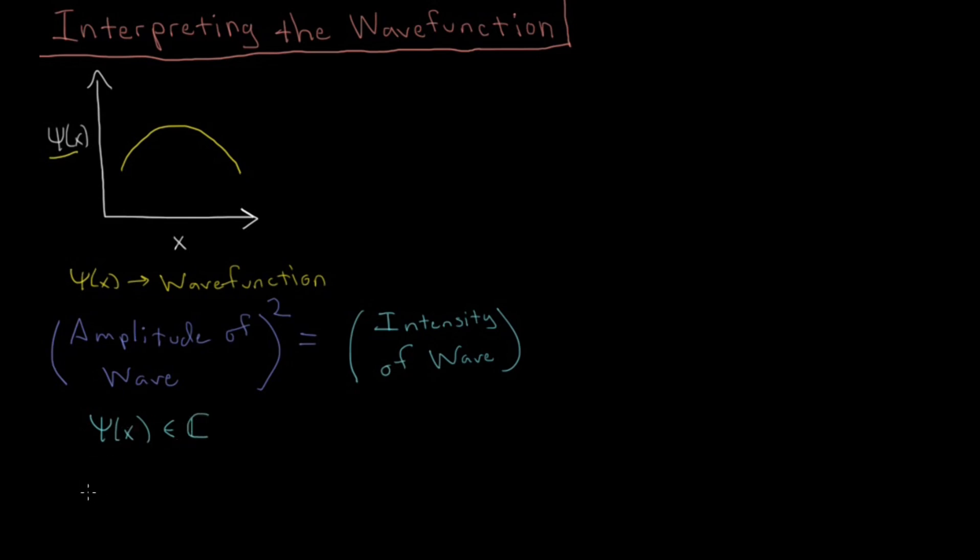So let's just remind ourselves of some of the properties of complex valued functions. If we have some f of x, which is going to be complex, then that is going to be the sum of a part which is real, plus i, which is the square root of negative 1, times some imaginary part. So some part which is real, some part which is imaginary, the sum of those together is going to be complex.